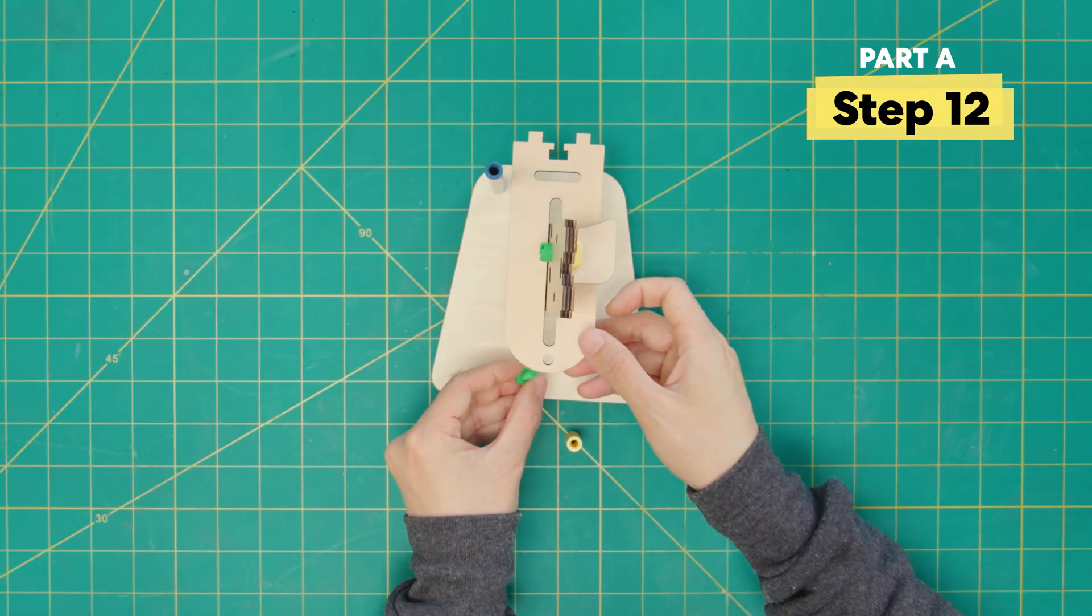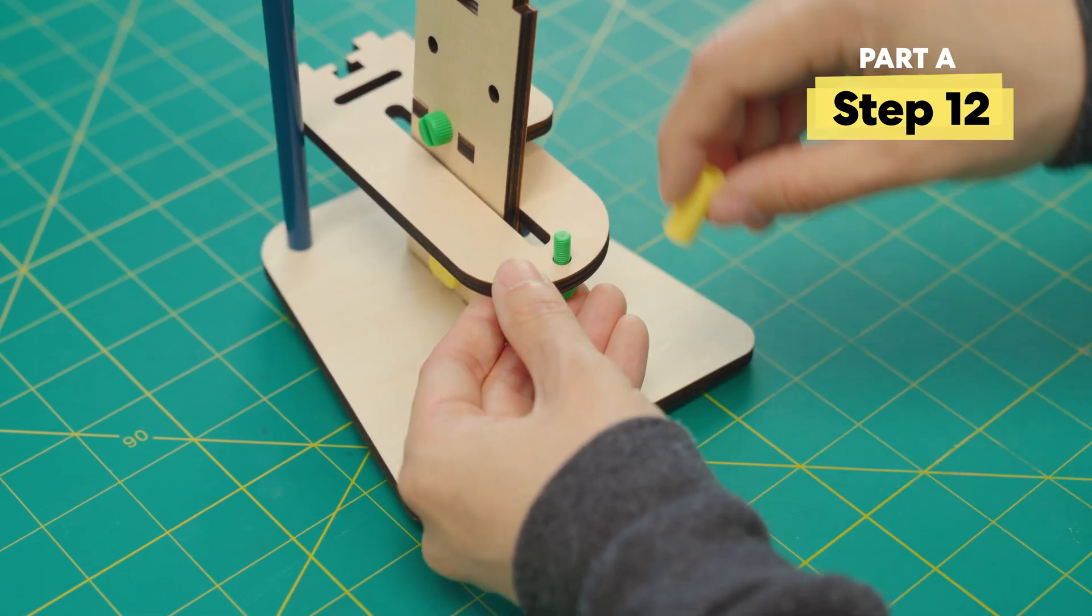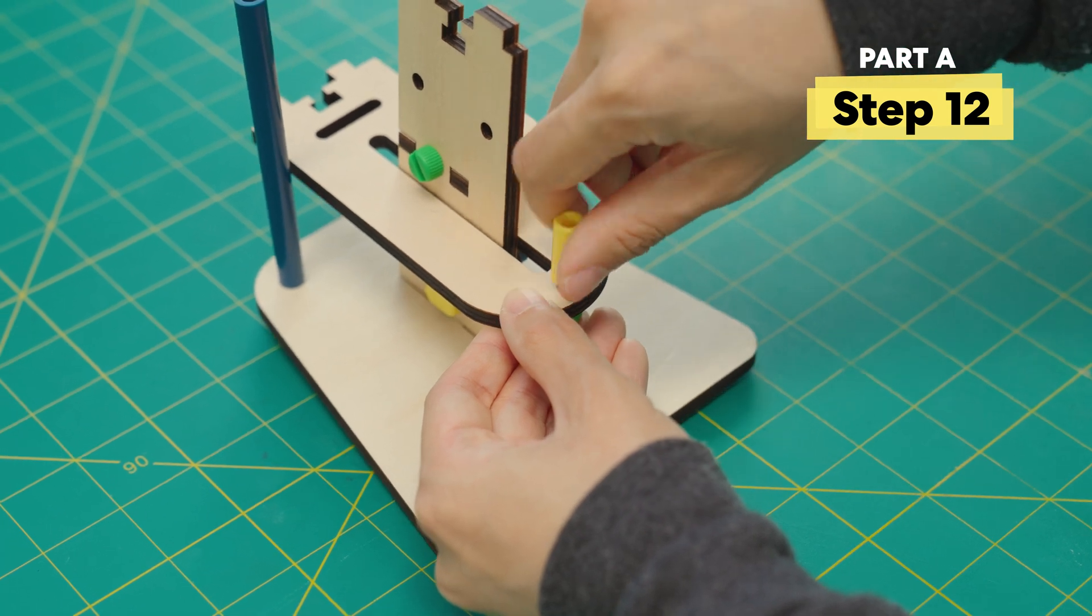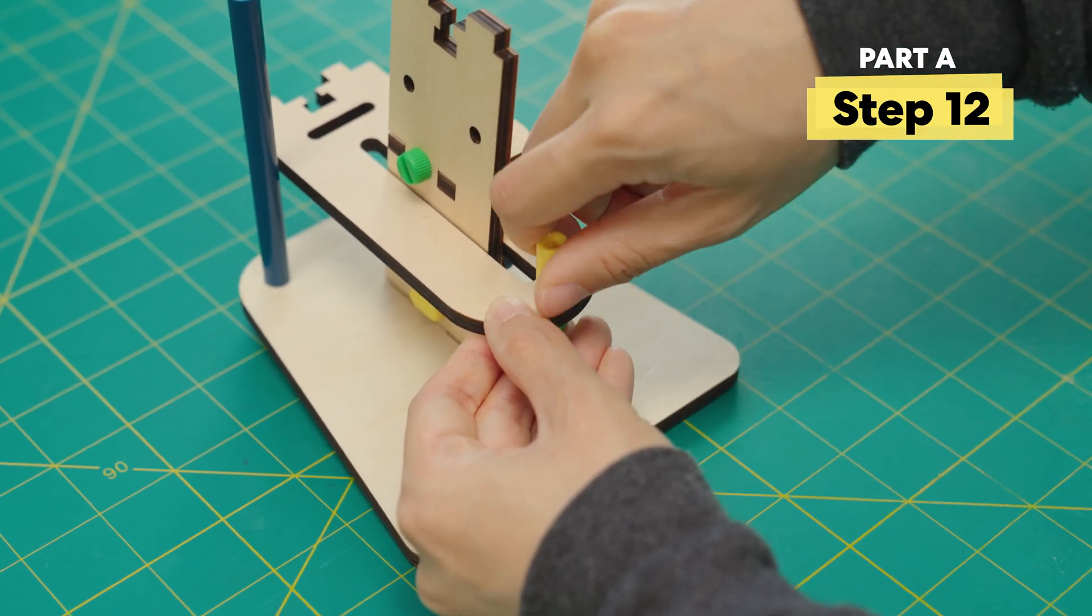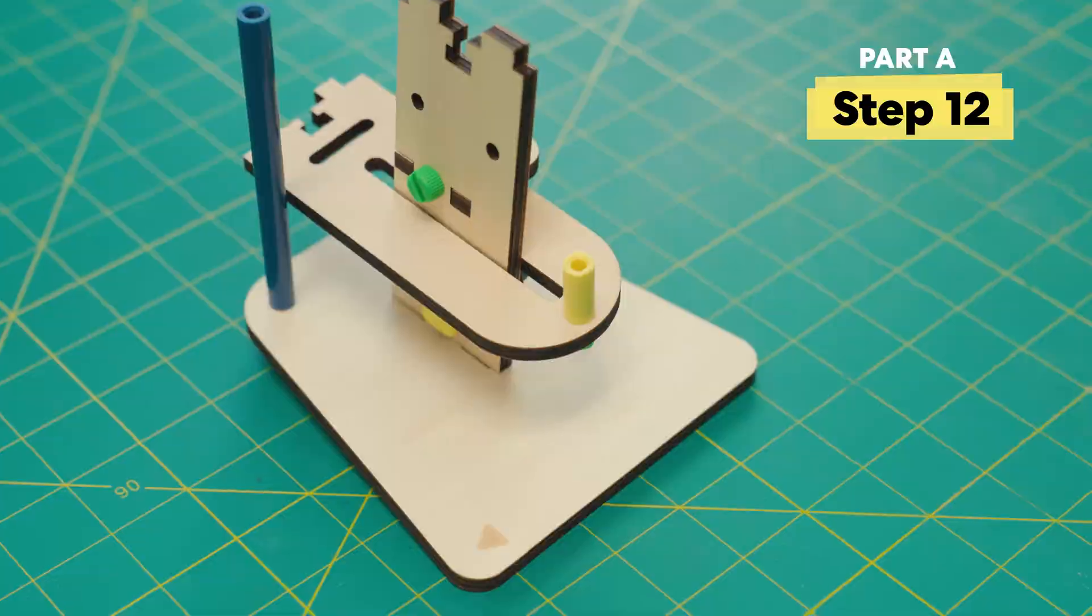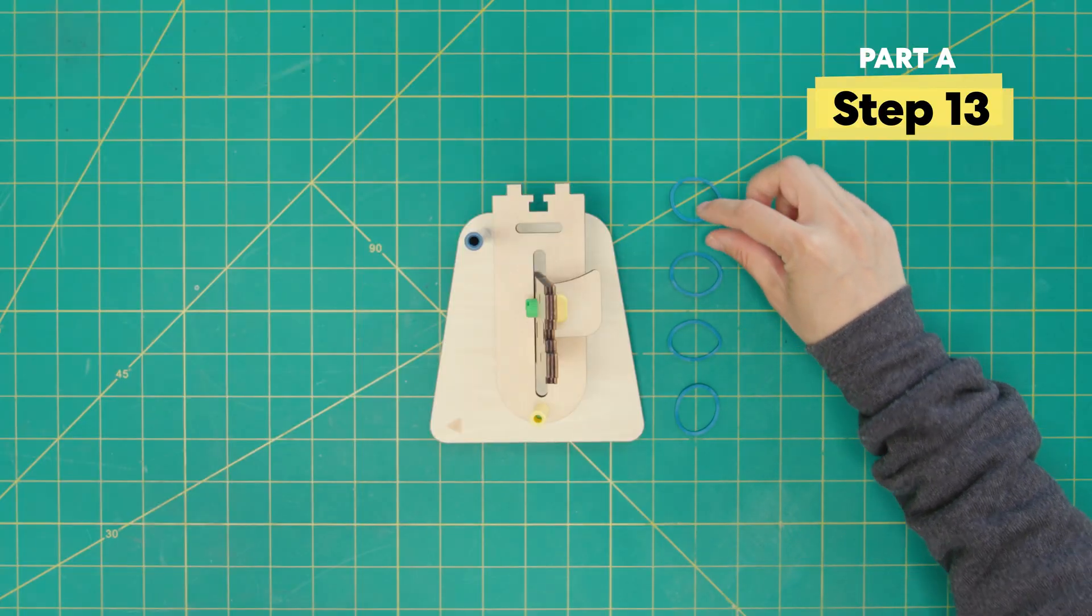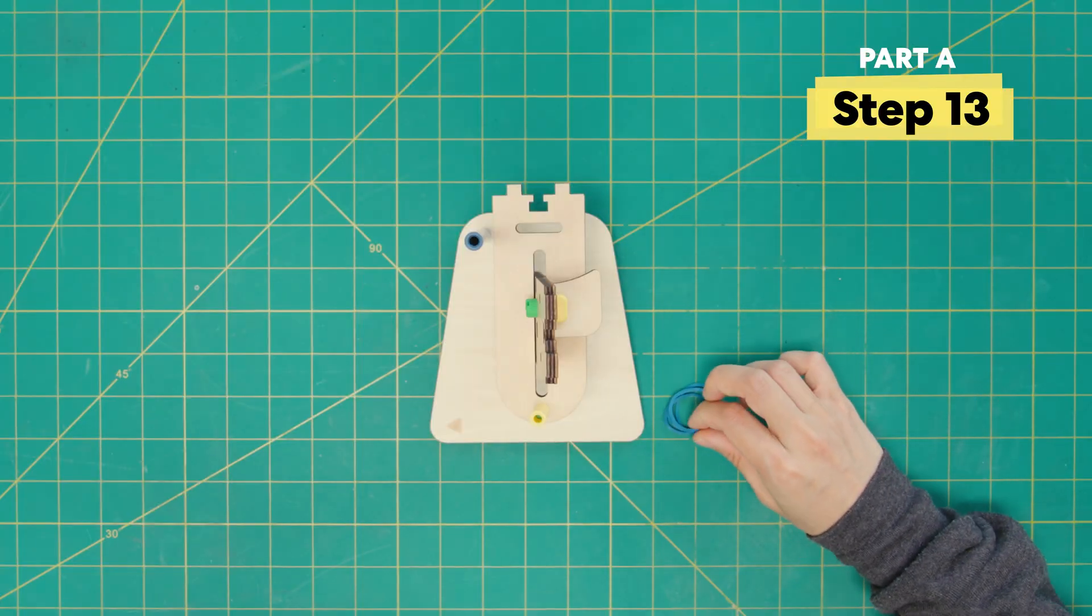Now, poke through the green bolt through this hole and twist on a yellow spacer. Let's stack up the four rubber bands and we're going to place these four over the spacer.